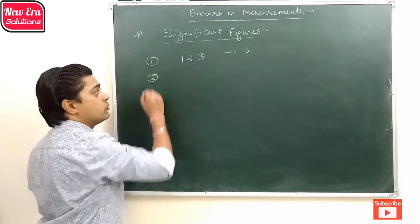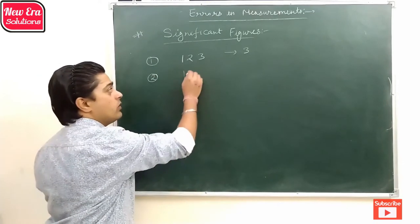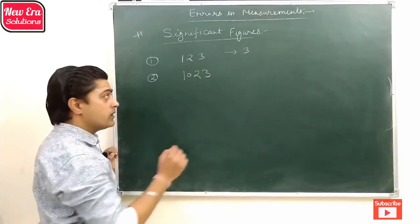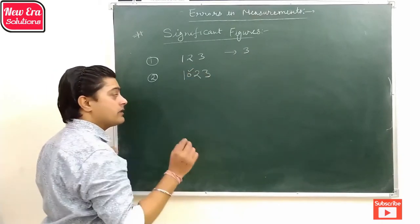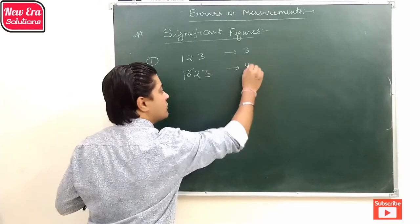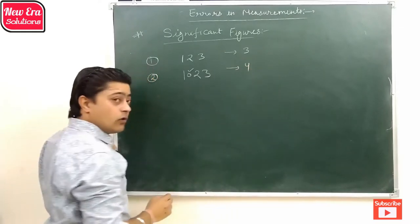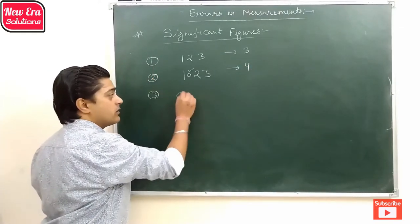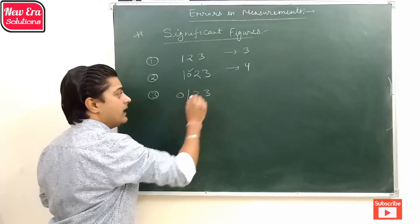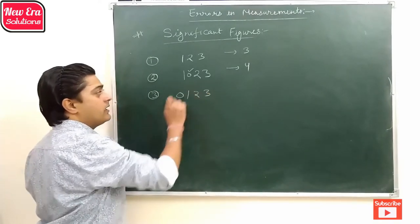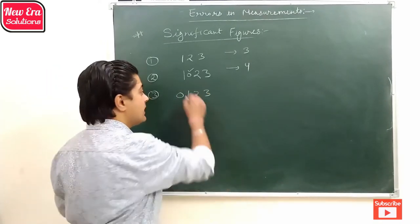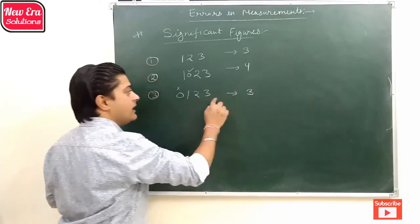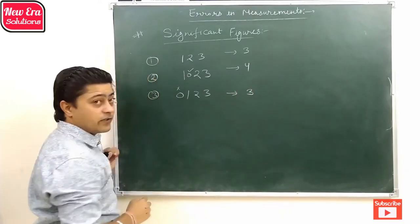In rule number two, if there is a zero that lies between non-zero numbers, then the zero is also significant. So there are four significant digits. In rule number three, if a zero lies on the left-hand side of a non-zero number, then it is not significant and there are only three significant digits.